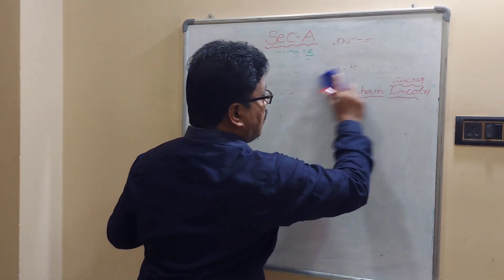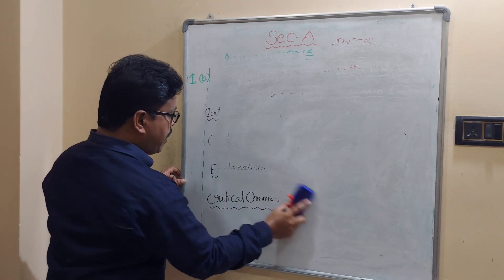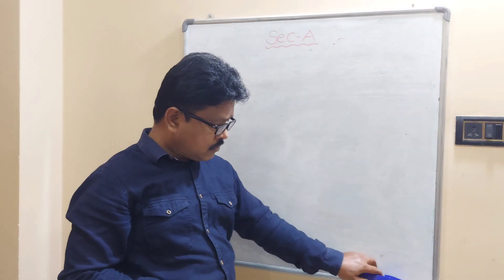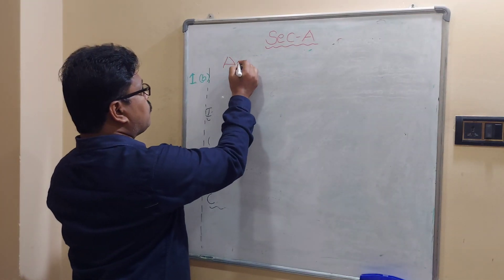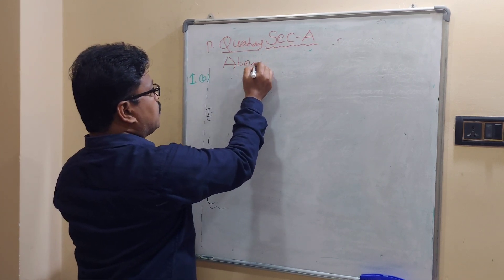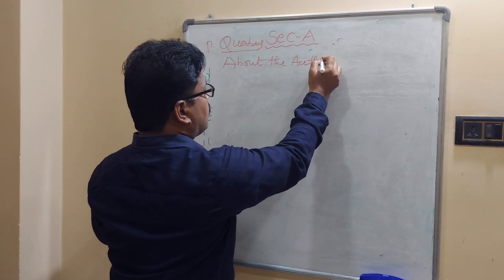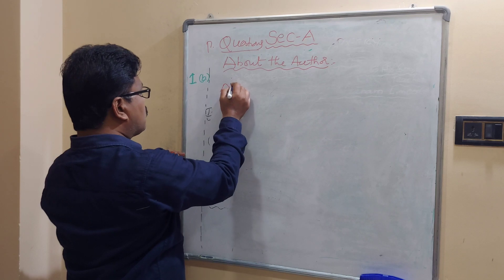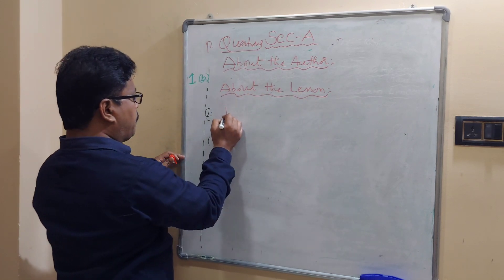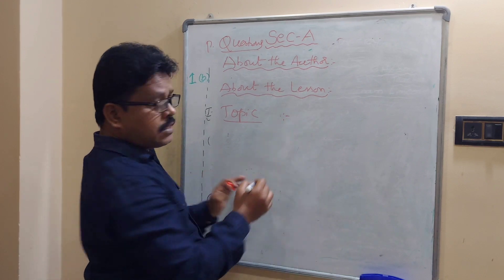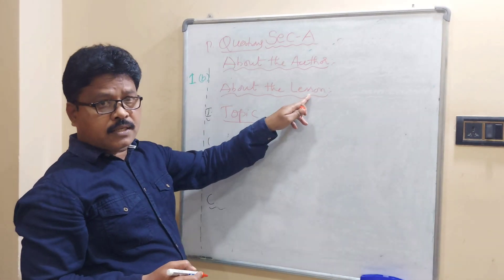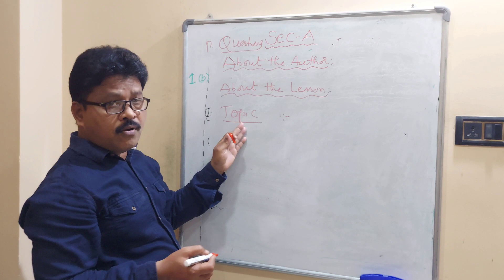The third question after annotations is paragraph questions. For paragraph questions also, four paragraphs are required. The first paragraph is about the author, the second is about the lesson, the third — the most important — is the topic (just like Explanation in annotations), and the fourth is Critical Analysis (just like Critical Comment in annotations).